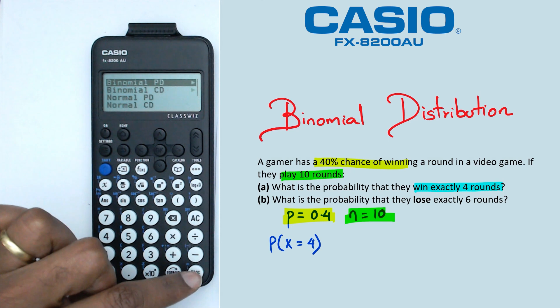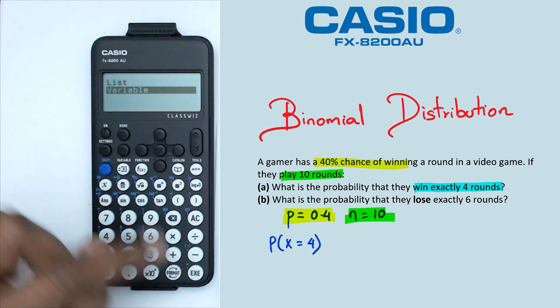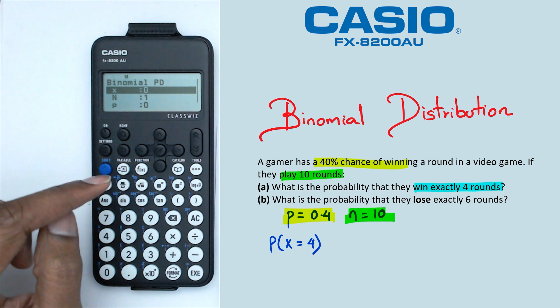So we're going to go into binomial PD. We're going to press EXE. And we're going to make sure that we click on variable. And in here, we're going to put in all of our details. So X is equal to four.